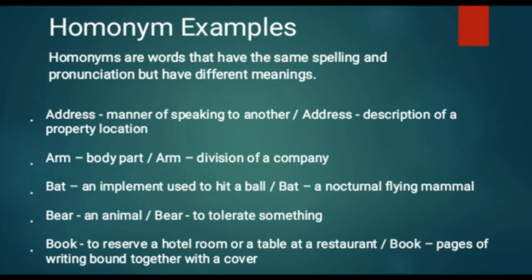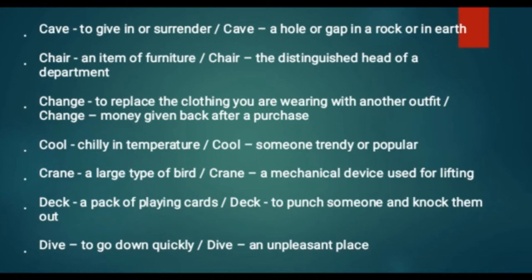The second example is 'arm,' which is a body part, but 'arm' is also a division of a company or defense. The defense has three arms: Army, Navy, and Air Force. The third example is 'bat' — an implement used to hit a ball in the popular sport of cricket — and another 'bat' is an animal, a nocturnal flying mammal. Likewise, you can build homonyms with bear, book, bride, cave, and so on.